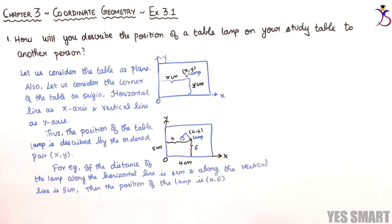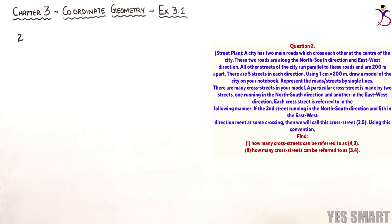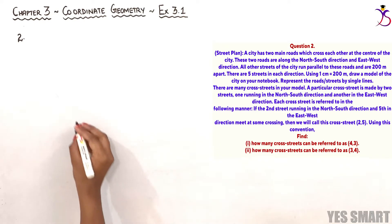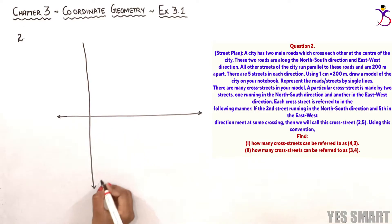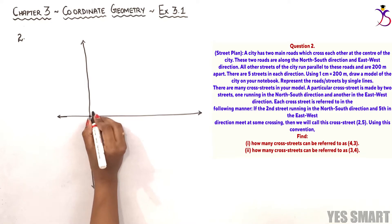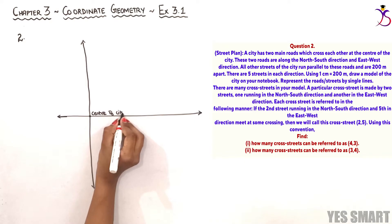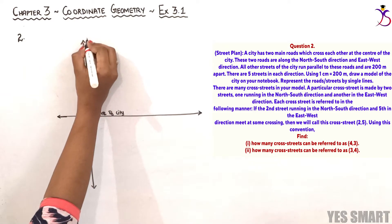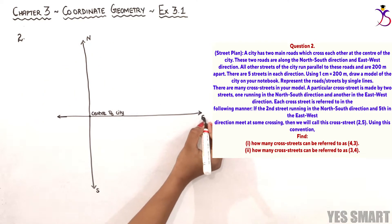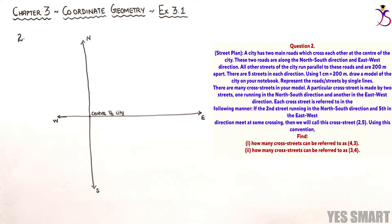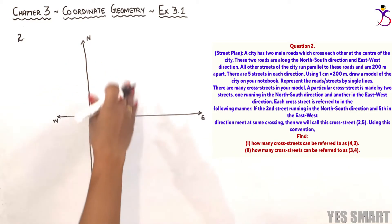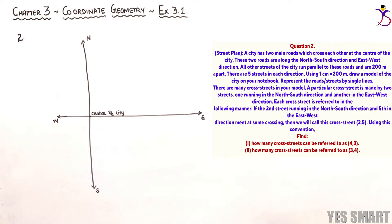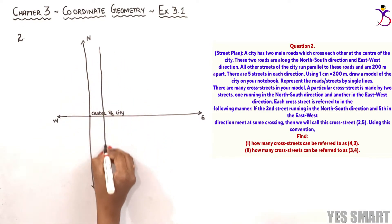Now let's discuss the second sum. A city has two main roads which cross each other at the center of the city. These two main roads are along the north-south direction and the east-west direction. All other streets of the city run parallel to these roads and are 200 meters apart, in both the south direction and the east-west direction.